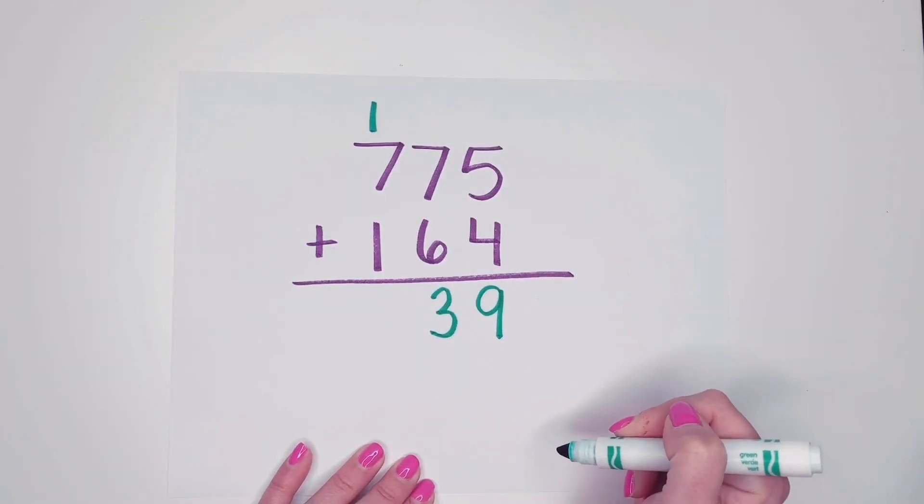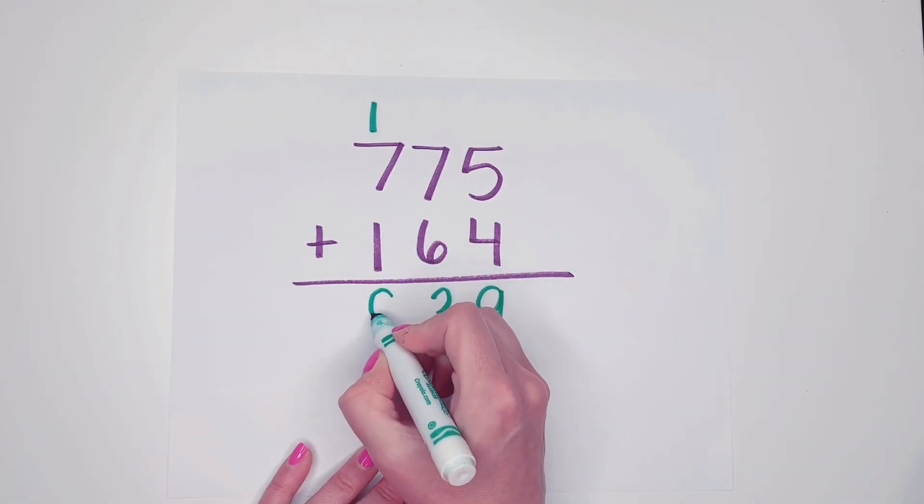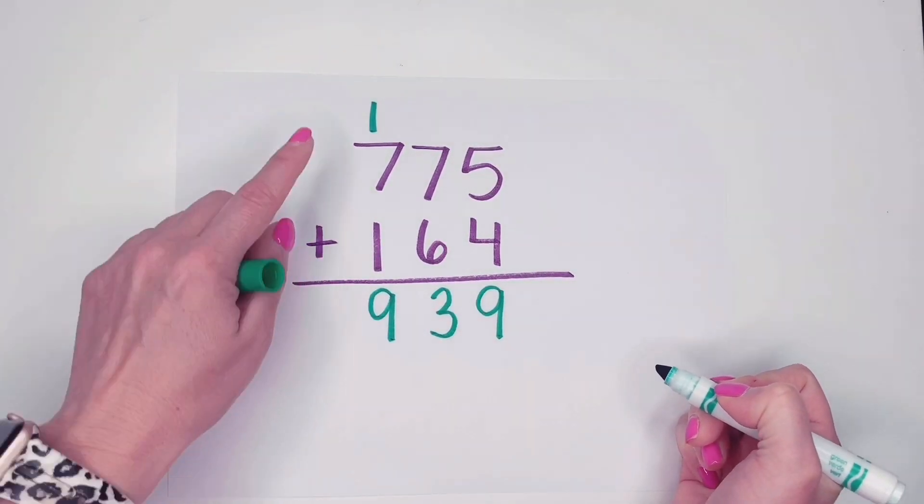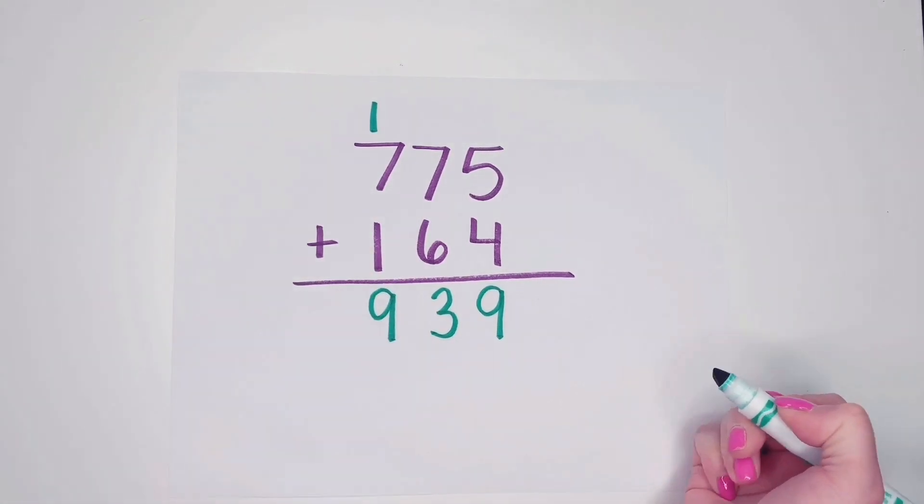Now I can add my hundreds column. One plus seven is eight plus one more is nine. And remember, that's just like saying one hundred plus seven hundred is eight hundred plus one more is nine hundred. So our answer is nine hundred thirty-nine.